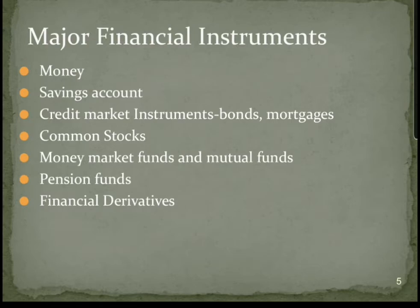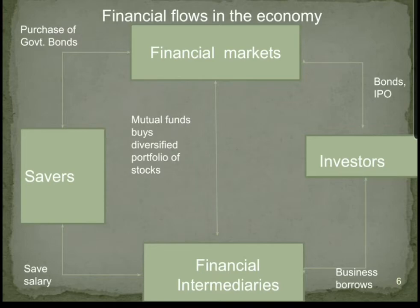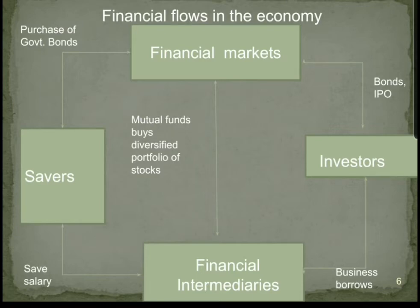This is the financial flow in the economy. In the financial market, investors invest money with the help of bonds and IPOs. Savers purchase bonds, and financial intermediaries ensure that this regular flow takes place. So the financial market caters to savers, financial intermediaries, and investors. By means of purchasing government bonds, savers help ensure their deposits from their salaries or income, while investors generate money by borrowing from the economy.